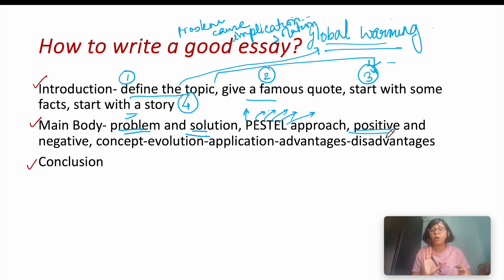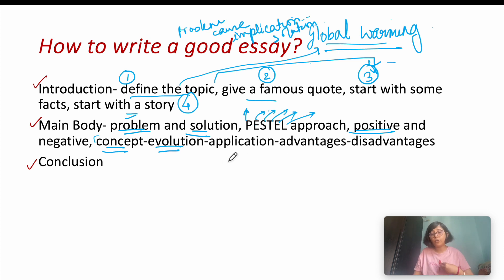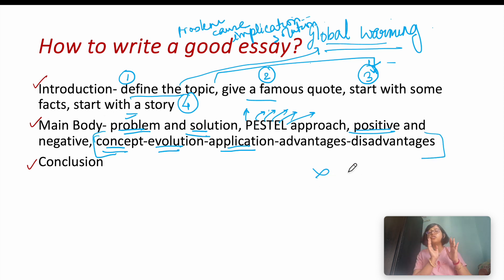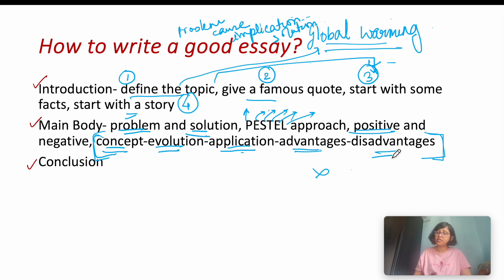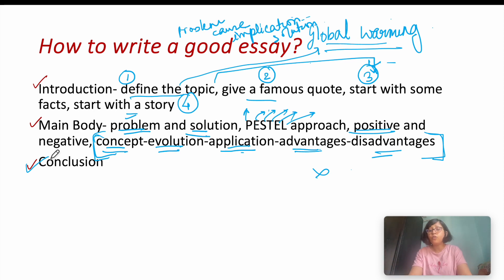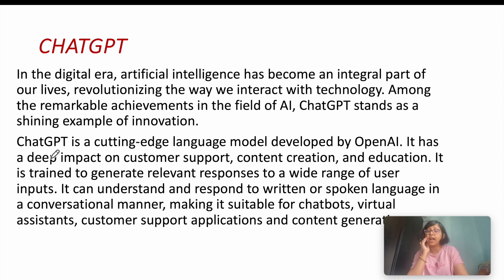Next is the positive and negative approach — take a topic, write down the positive effects and the negative effects. Another approach is: define the concept, then cover its evolution and how it developed, then its practical applications. For today's topic, Chat GPT, we'll cover concept, applications, advantages, disadvantages, and conclusion.